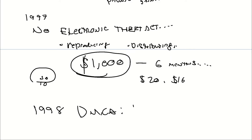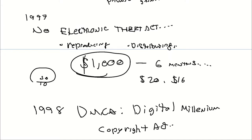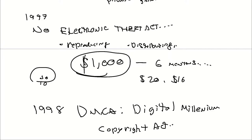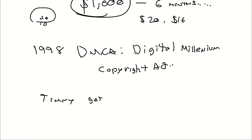Then there's the DMCA — the Digital Millennium Copyright Act. Most of us have heard about getting DMCA'd. For example, someone might get a DMCA takedown notice for downloading a copy of a movie. I'll tell you a story: I have a friend who got a DMCA takedown notice for downloading a copy of Shrek 2, of all movies.